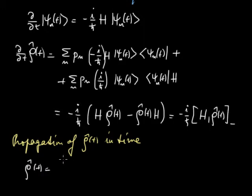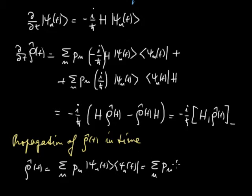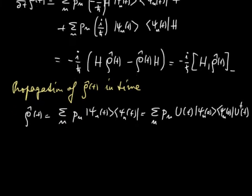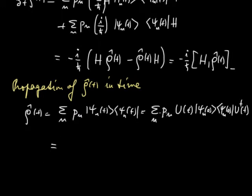This evolution can be written as an operator dependent on t multiplying the psi n at t equal 0. So this we will use now. So we have rho t is equal to sum over n p n psi n t, psi n t. That's our definition. And then in the next step, we use the, we basically expand this here. We will write that it is U t acting at psi n at the time 0, and the same we get here with just Hermitian conjugation.